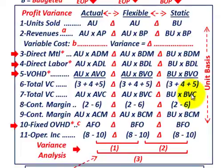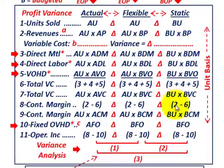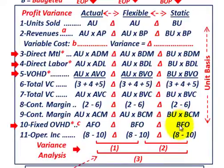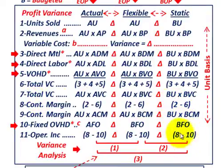That gives us our contribution margin, determined by taking revenues — budgeted units times budgeted price — and subtracting out total variable costs. Or you could use the budgeted contribution margin on a per unit basis. Then we subtract fixed overhead. For our static budget, it's going to be the budgeted fixed overhead. So operating income is simply contribution margin minus fixed overhead.